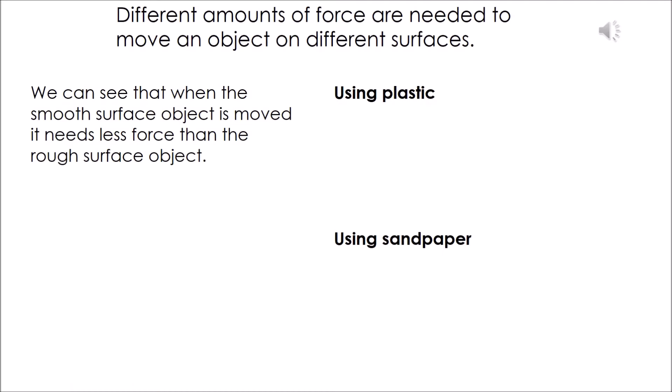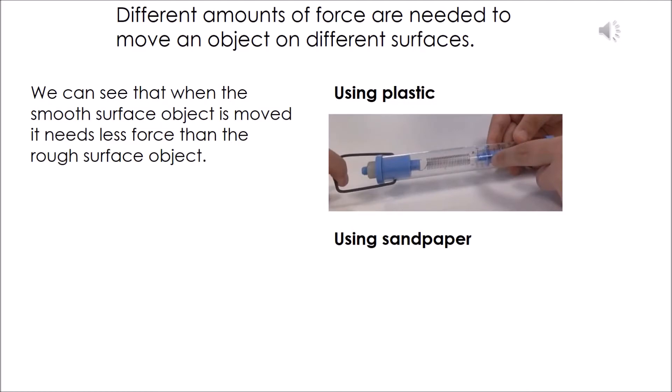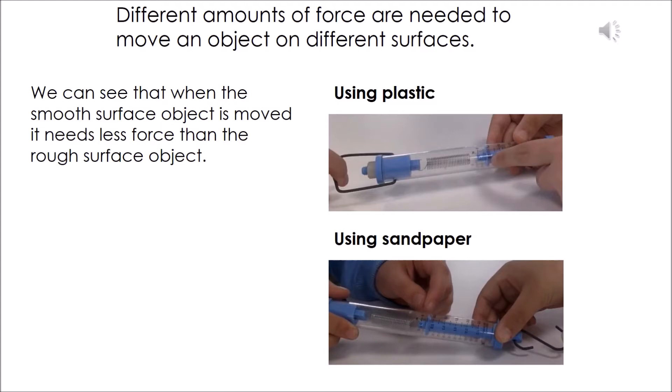We can see that when the smooth surface object, the block with the plastic, is moved, it needs less force than the rough surface object, the block with the sandpaper. We can also state the opposite.